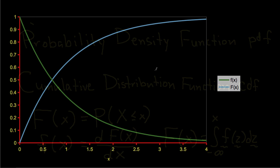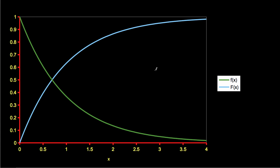The following shows plots of the cumulative distribution function and the probability density function for what's called an exponential random variable. This function here is the density function, and this function here is the cumulative distribution function.